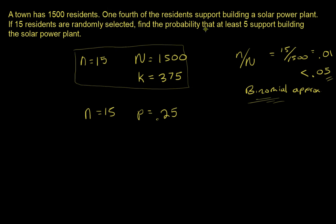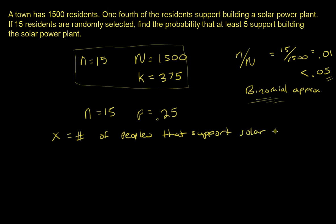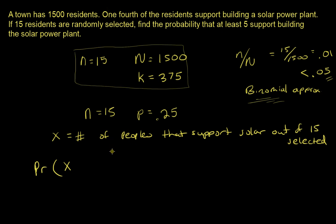X is the number of residents who support the solar power plant out of 15 selected. We want to calculate the probability that X is at least five, meaning greater than or equal to five. X could range from zero all the way up to 15.